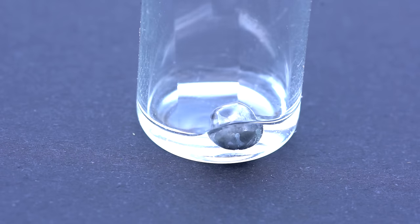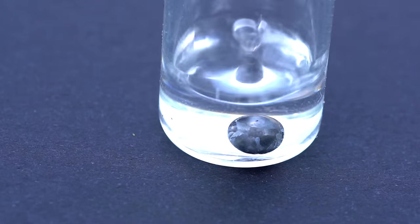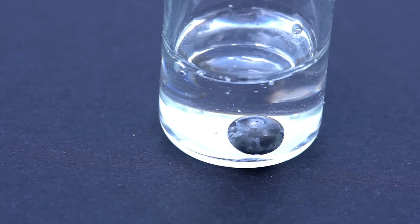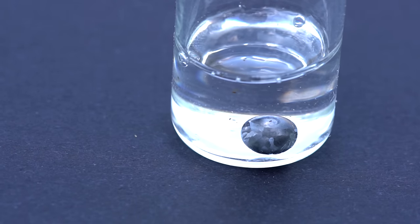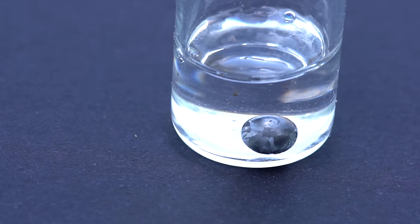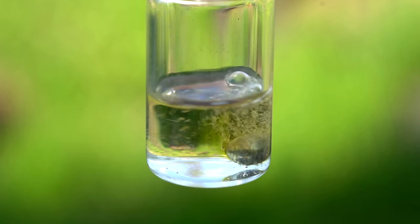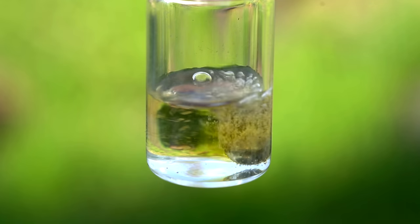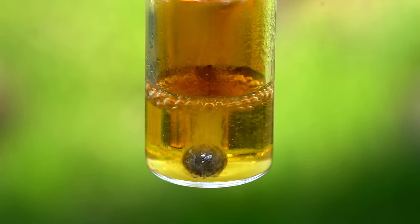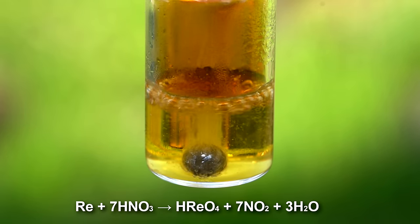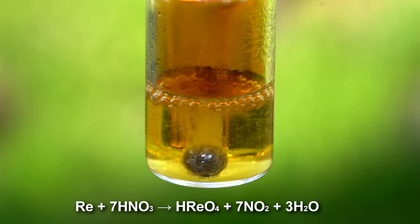Let us continue testing out this rhenium drop and throw it into concentrated nitric acid. Now, nothing seems to be happening. Upon heating up, things get more interesting. The rhenium drop slowly starts to dissolve in the acid, creating nitrogen oxide and rhenium acid, which is very soluble in water.